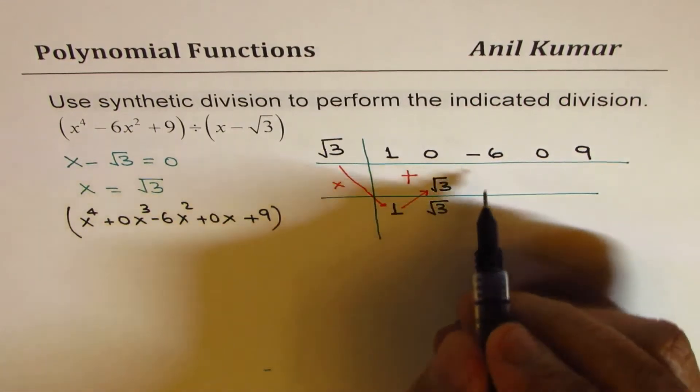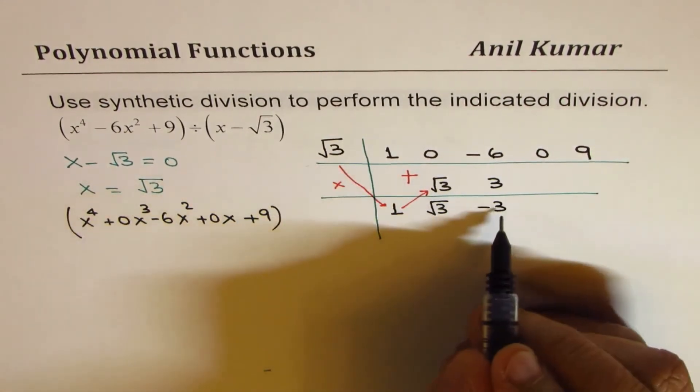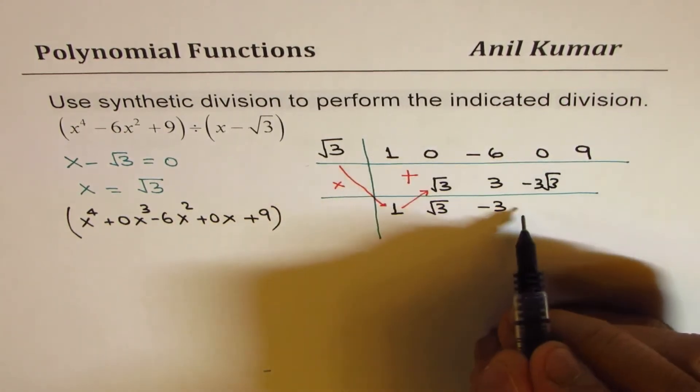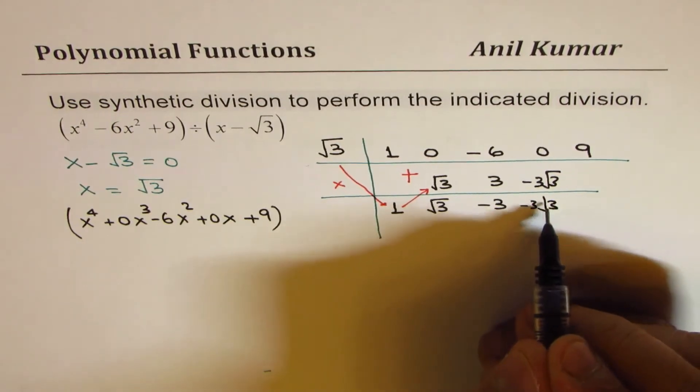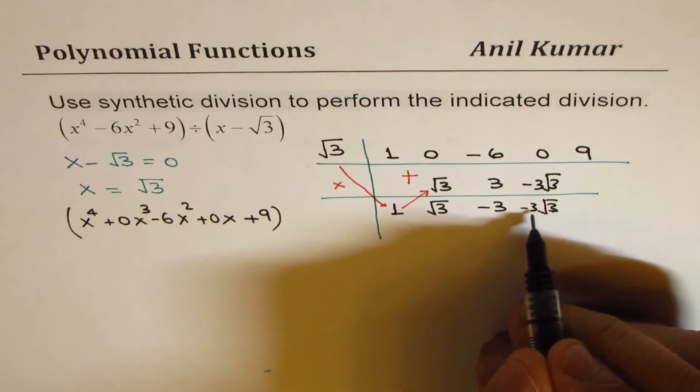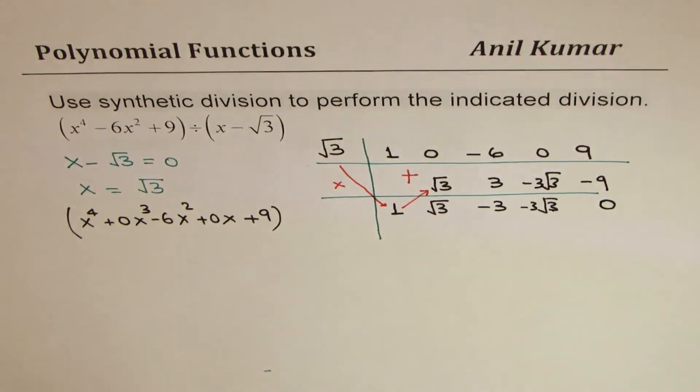Square root 3 times square root 3 is 3. When you add, you get minus 3. When you multiply, you get minus 3 square root 3. When you add, you get minus 3 square root 3. And when you multiply, that becomes 3 times 3 is 9 with a negative sign. And you get 0 on adding.